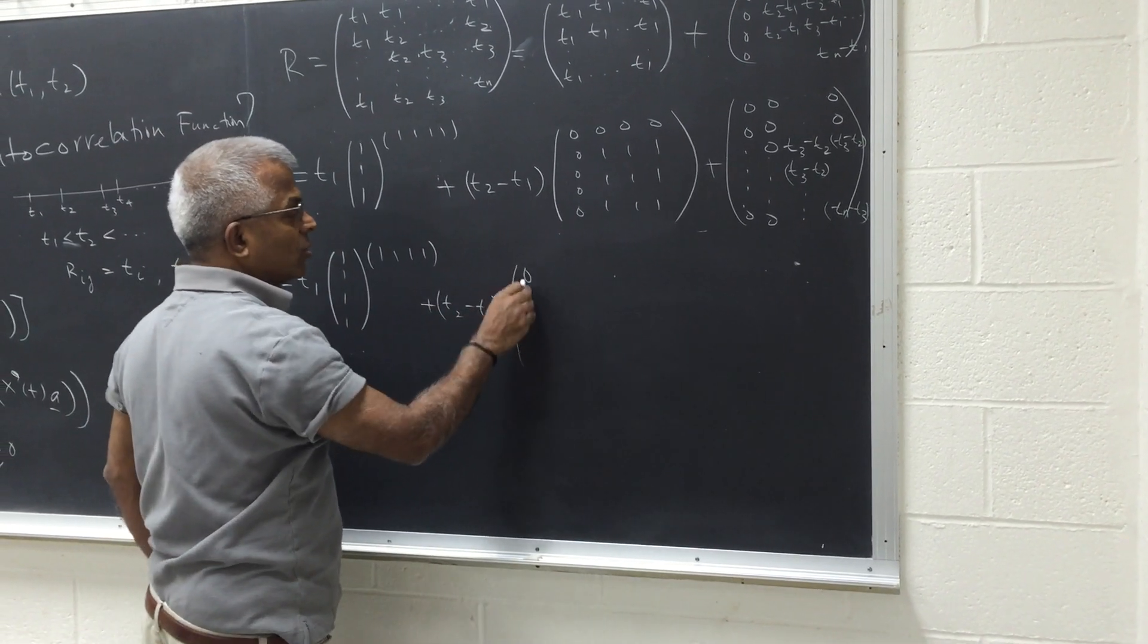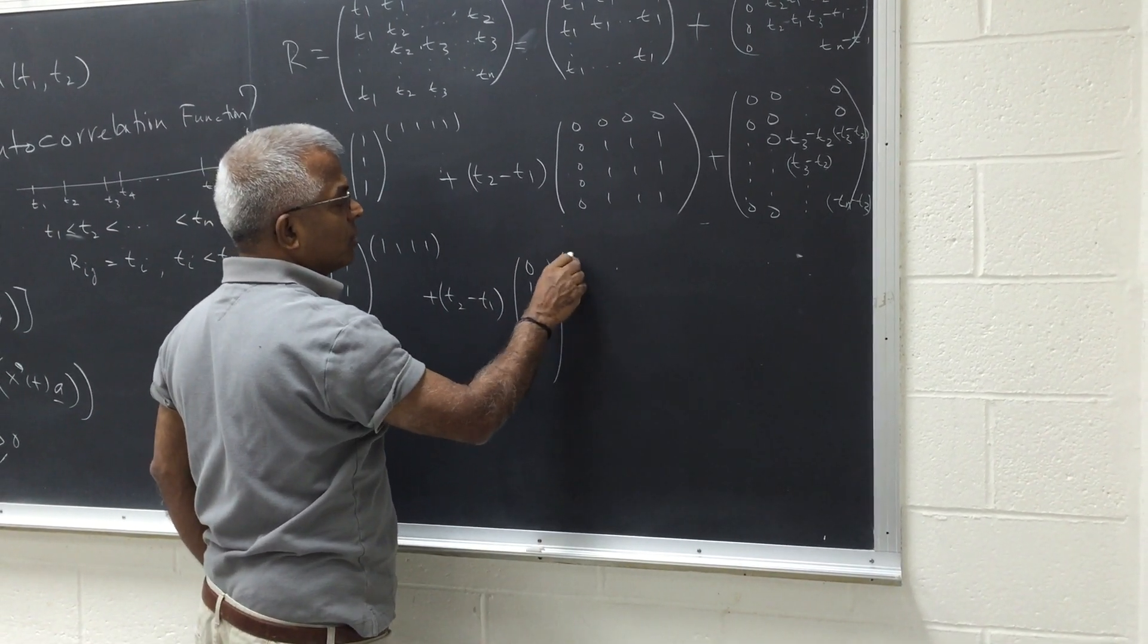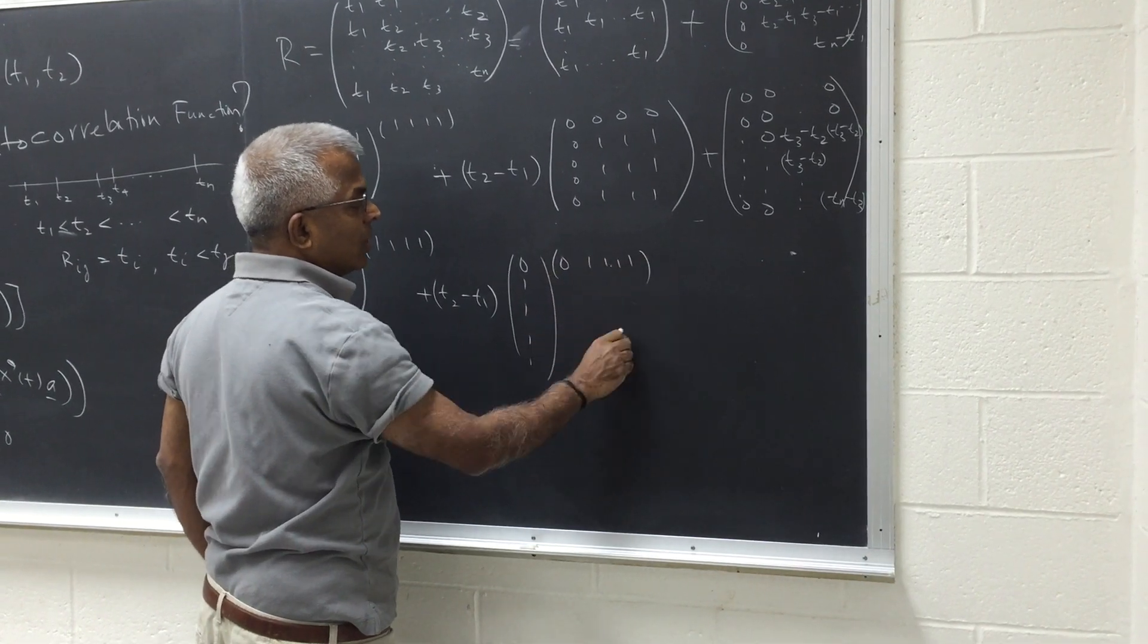This of course can be written as zero, one, multiplied by this conjugate, zero, one, one, one. You get the idea,